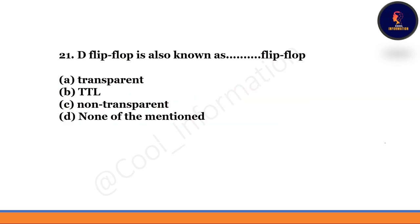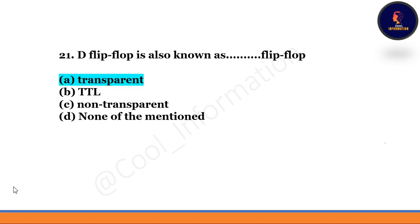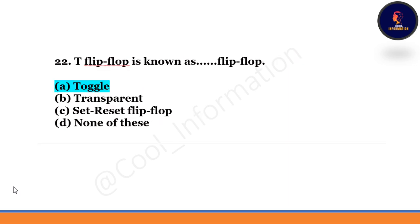Next question: D flip-flop is also known as which flip-flop — transparent, TTL, non-transparent, or none of the mentioned? The correct option is option A — D flip-flop is also known as transparent flip-flop. Next question: T flip-flop is also known as which flip-flop — toggle, transparent, set-reset, or none of these? The correct option is option A — T flip-flop is also known as toggle flip-flop. Remember: D flip-flop = transparent, T flip-flop = toggle. Do not confuse them.